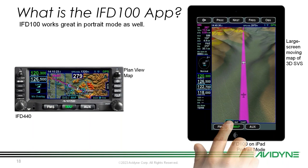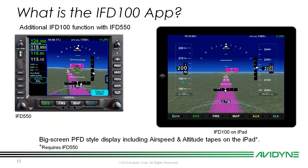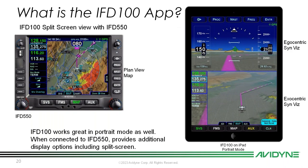Portrait mode is just another view of the synthetic vision page. So if I have an IFD550, which has that extra synthetic vision page, I will also get that extra synthetic vision page on my IFD100. It works great in portrait mode when connected to a 550, and it gives you a couple of different display options, including split screen mode — egocentric synthetic vision up top and exocentric synthetic vision on the bottom.